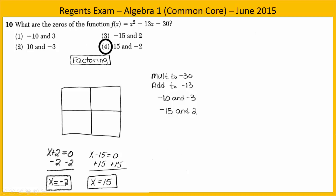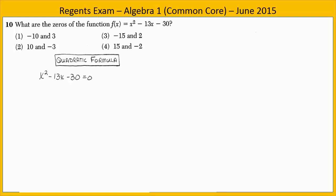Another option for factoring is to use the grid. Place x² in the upper left-hand corner, negative 30 in the lower right-hand corner, and negative 15x and 2x on the diagonal. Factor the greatest common factor across the top — the GCF of x² and negative 15x is x. Use multiplication to fill in the remaining places, giving us the factors x minus 15 times x plus 2.